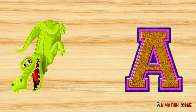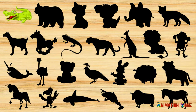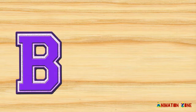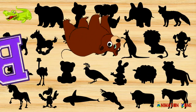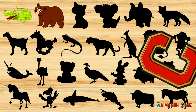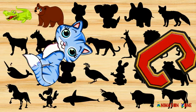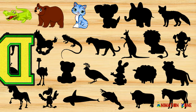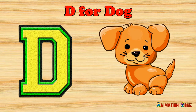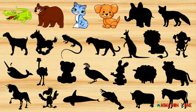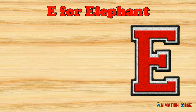A. A for alligator. B. B for bear. C. C for cat. D. D for dog. E. E for elephant.